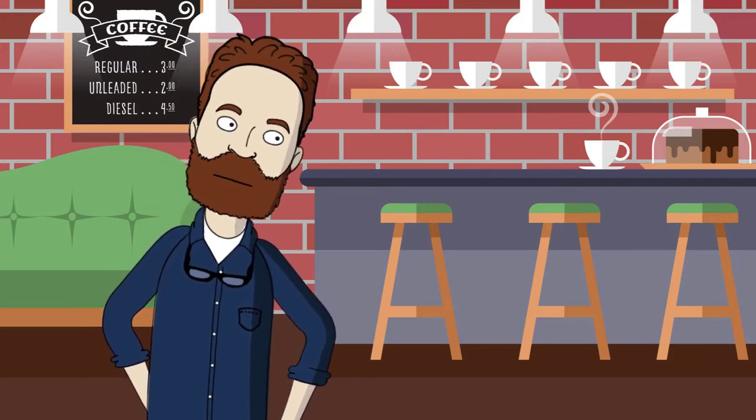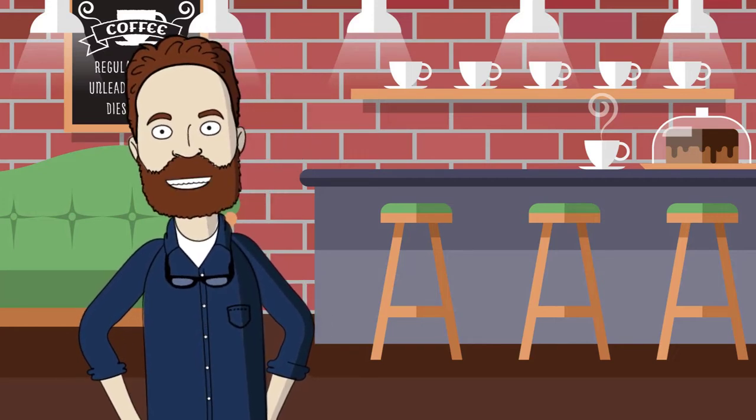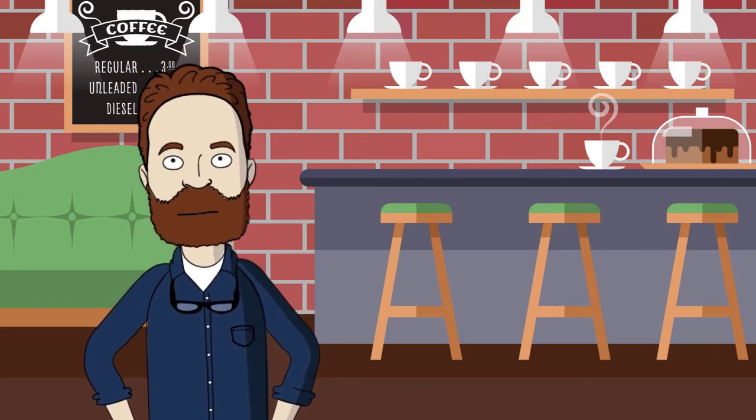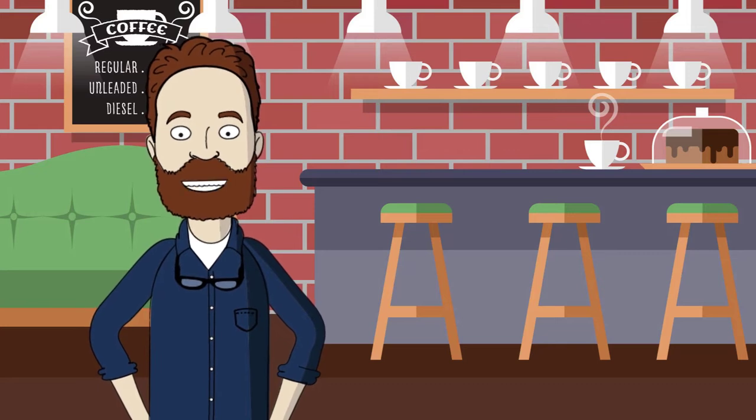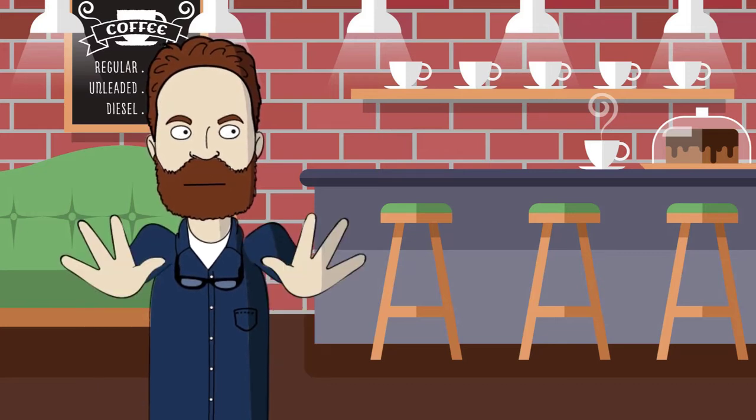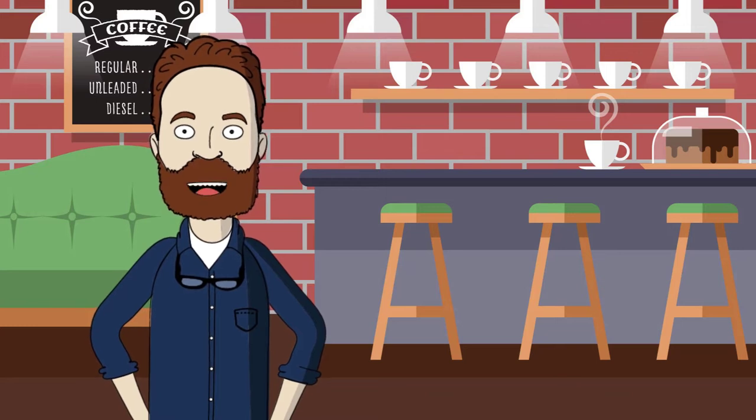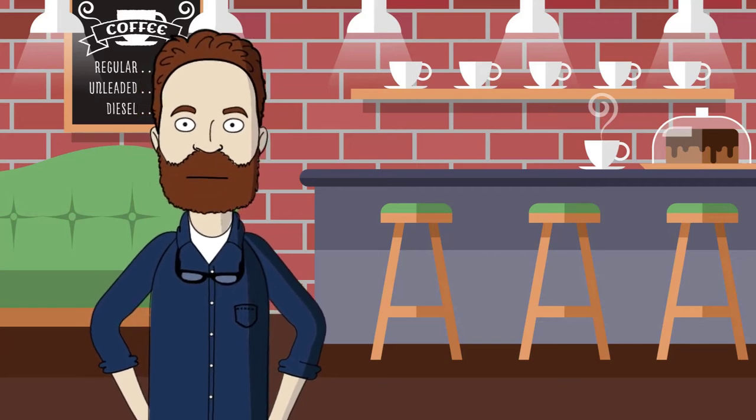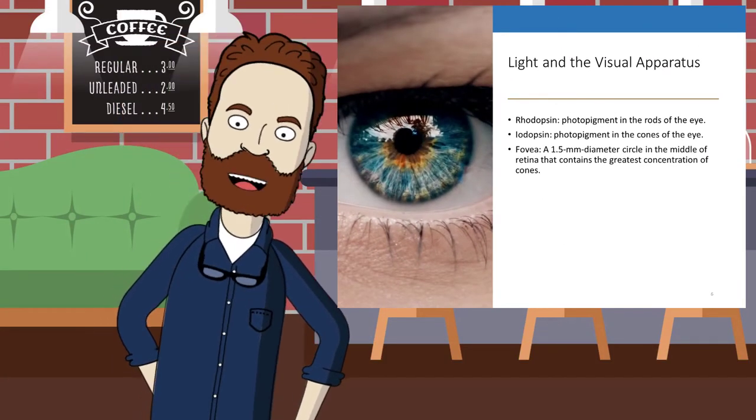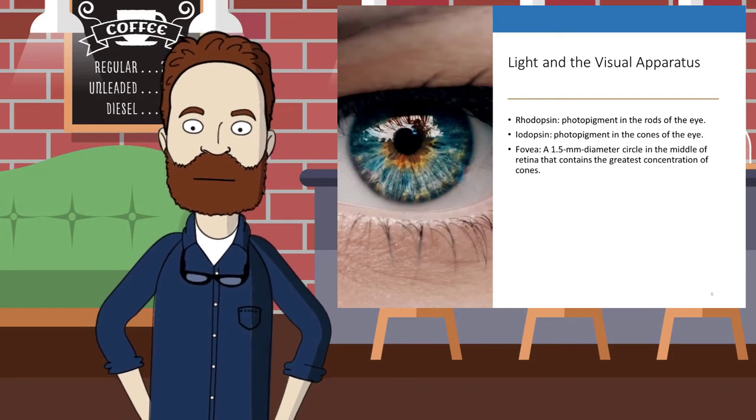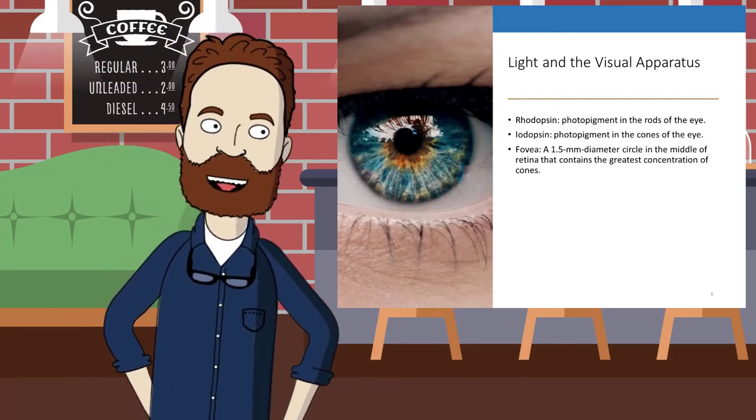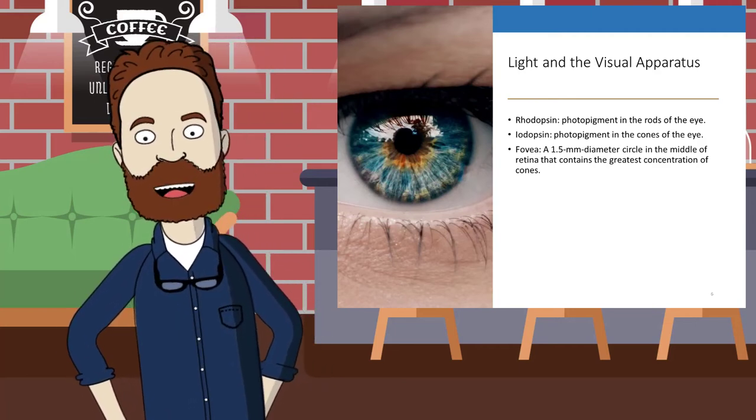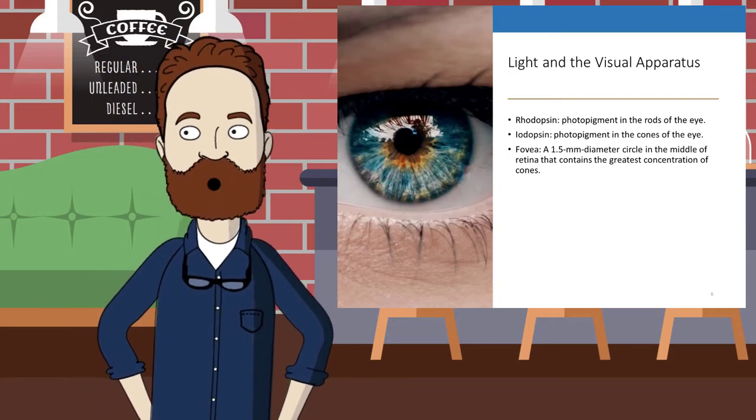Photopigment is light-sensitive chemicals. Photopigment absorbs energy from the light that causes some of the molecules to break down into two components, and the ensuing chemical reaction ultimately leads to a neural response. Components then recombine into photopigment. The human eye has about 92 million rods and about 4.6 million cones.